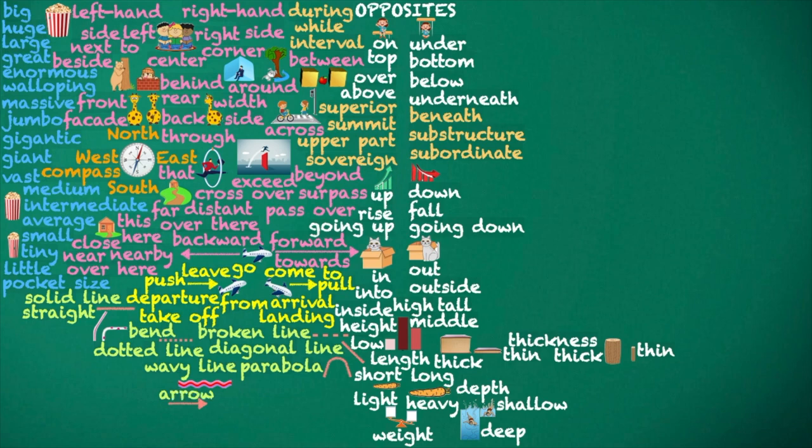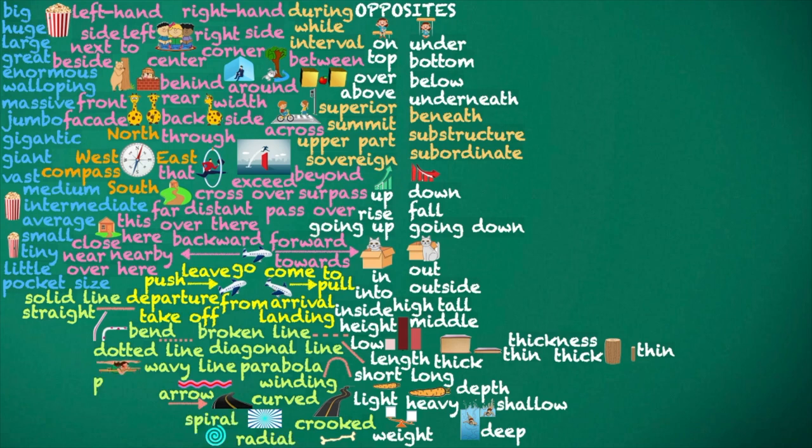Arrow. Curved. Winding. Crooked. Radial. Spiral. Parallel. Along. Angle. Degrees.